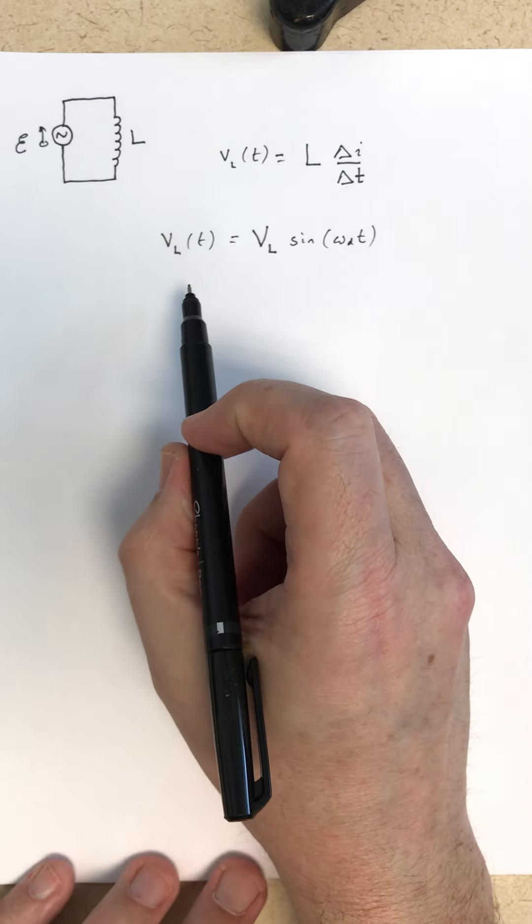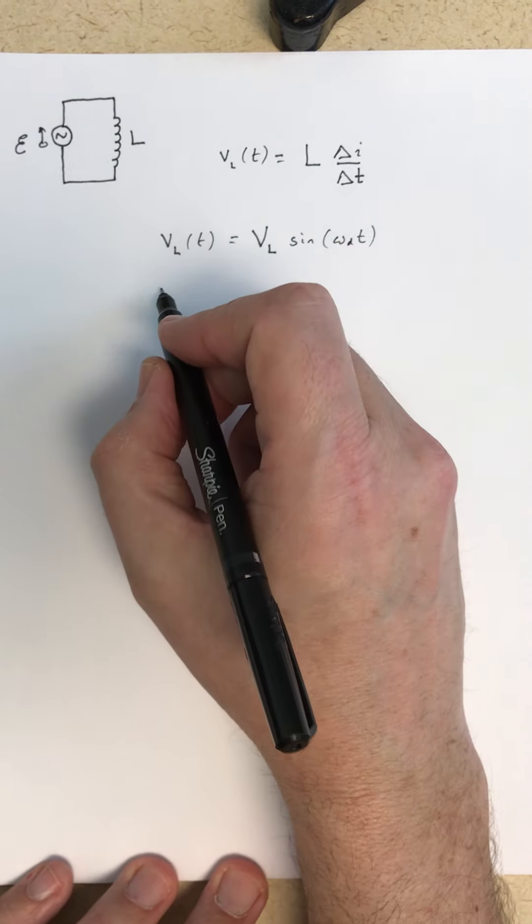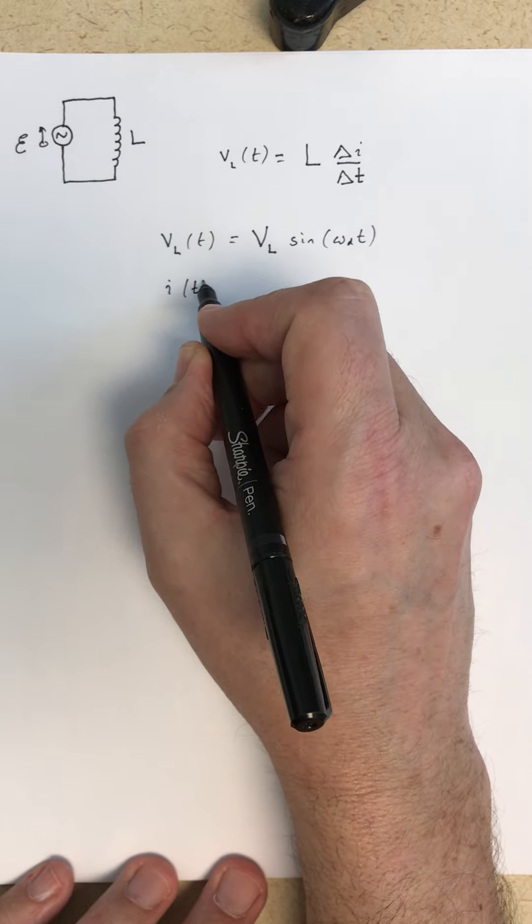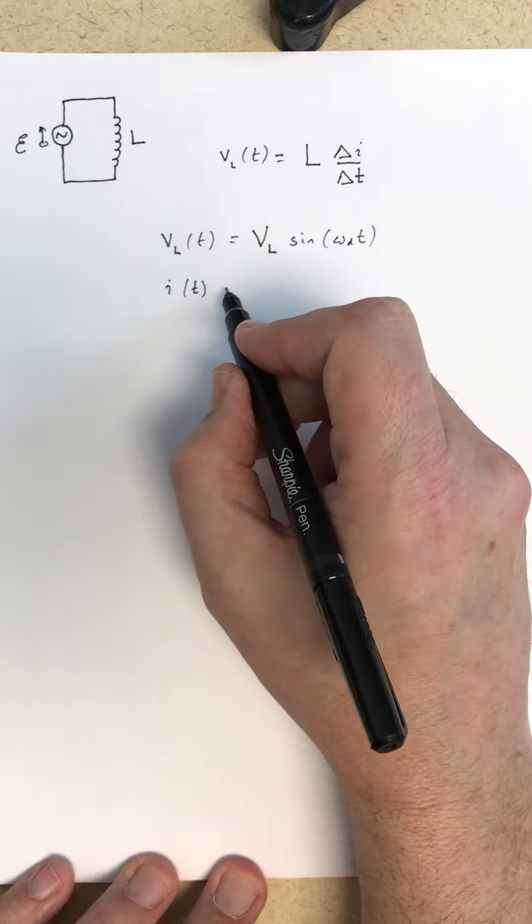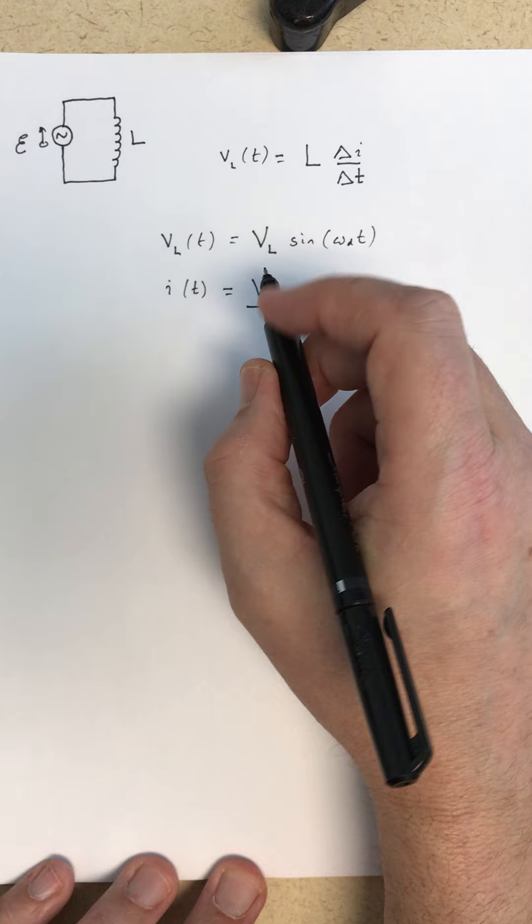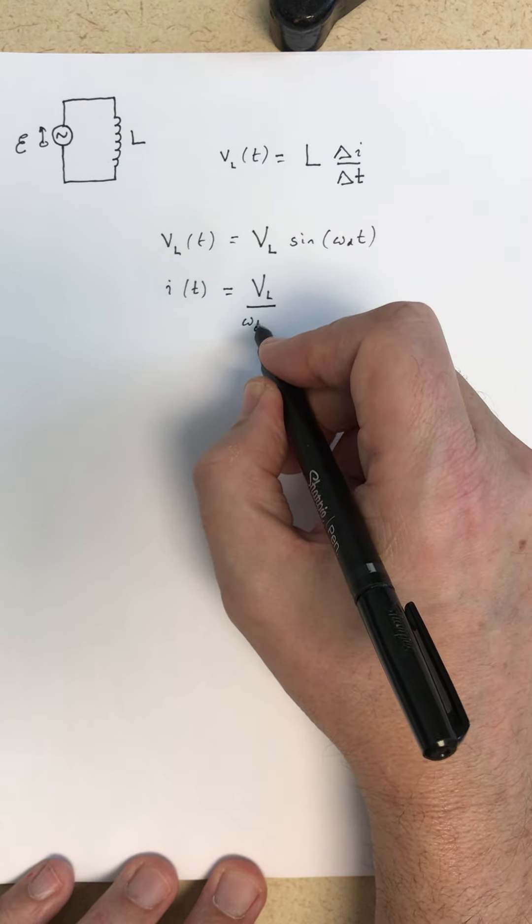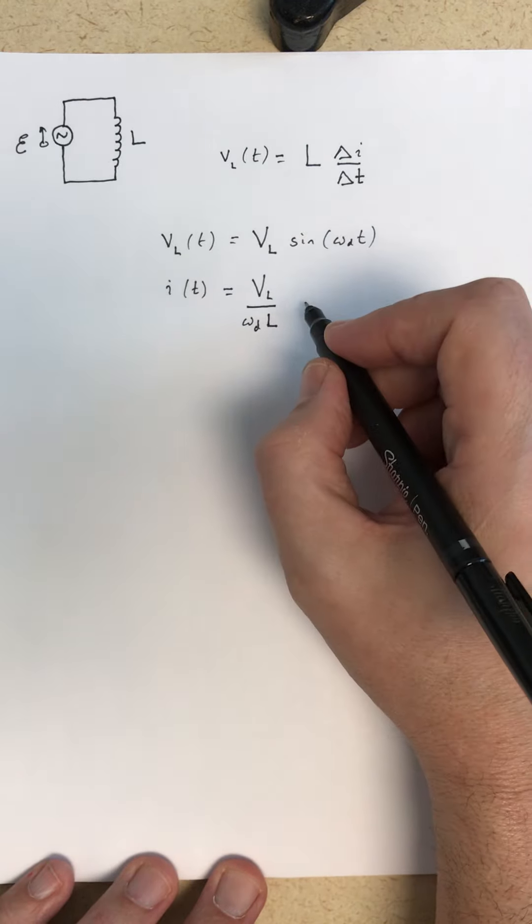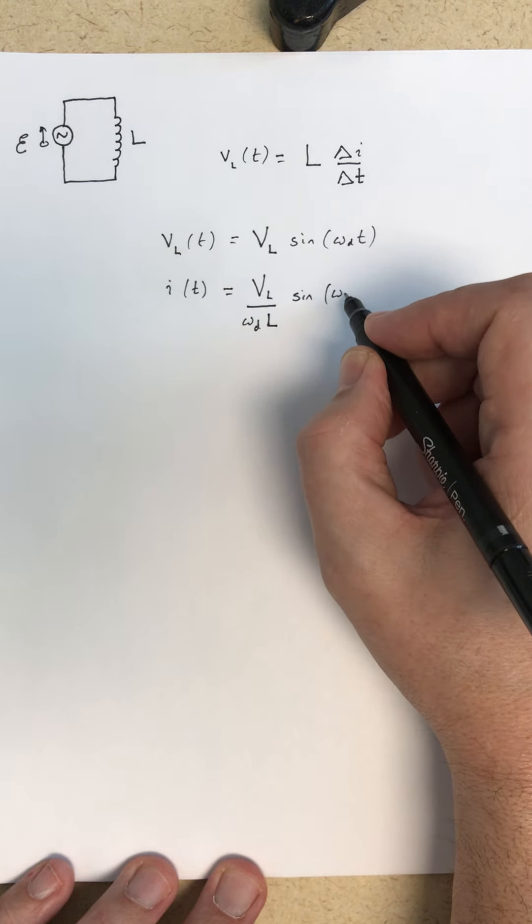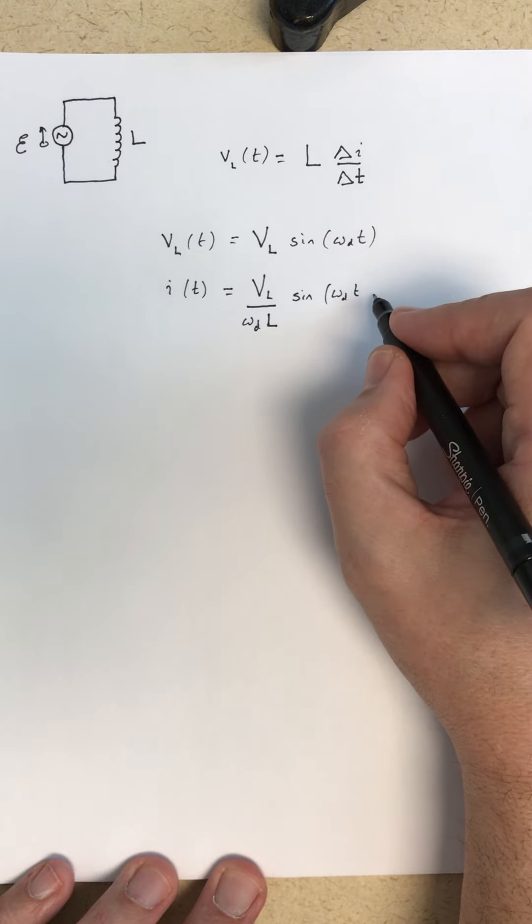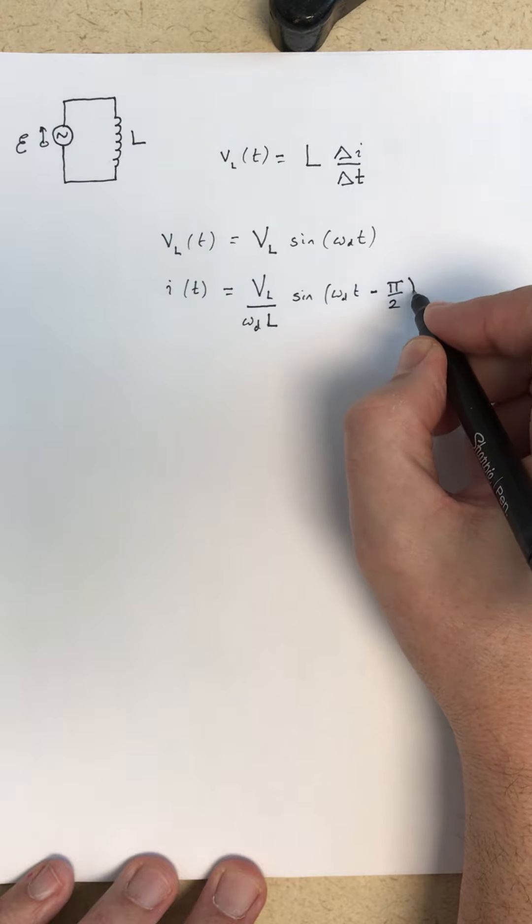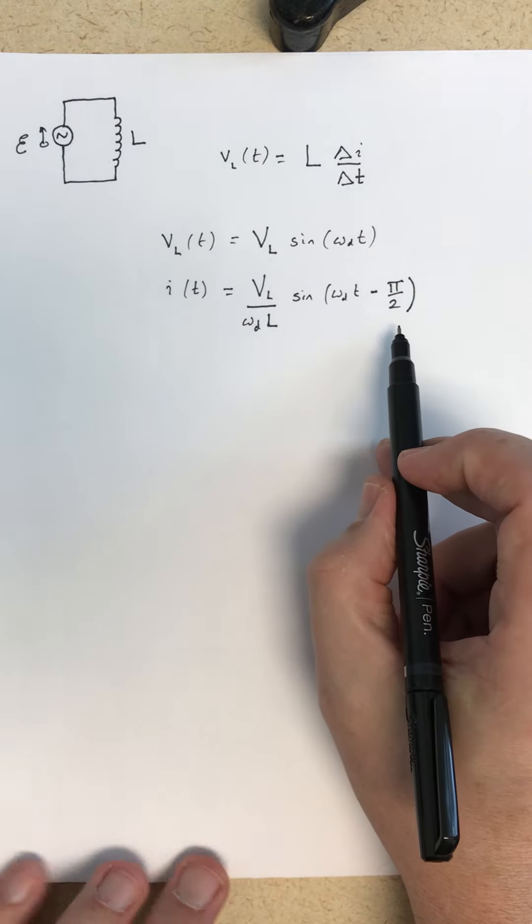That voltage is going to be some amplitude, and it varies as sine of the driving angular frequency times time. Then the current in our circuit is going to be the voltage amplitude over the driving angular frequency and the inductance, and it goes as sine of driving angular frequency times time, offset by π over 2, or 90 degrees.